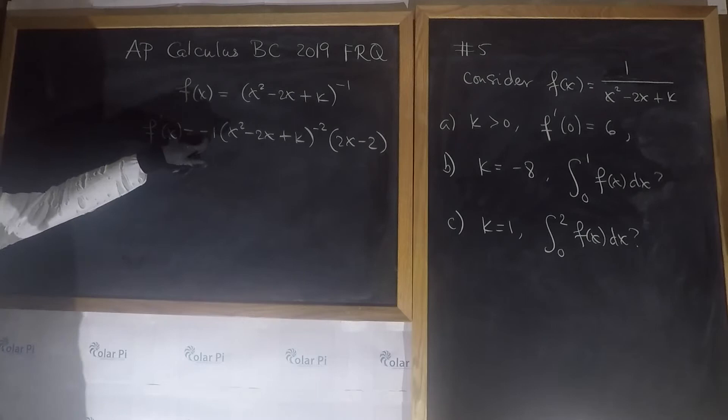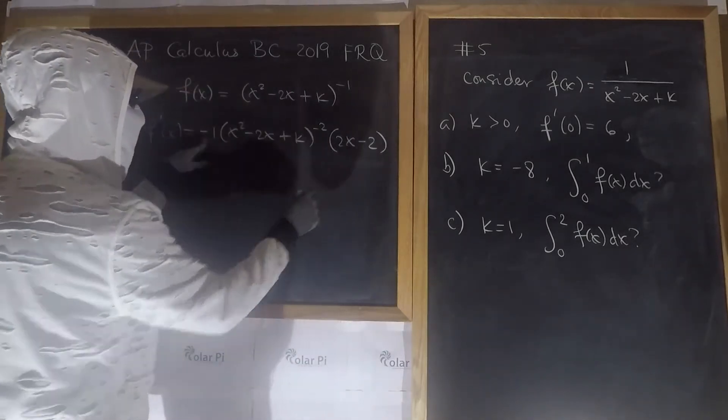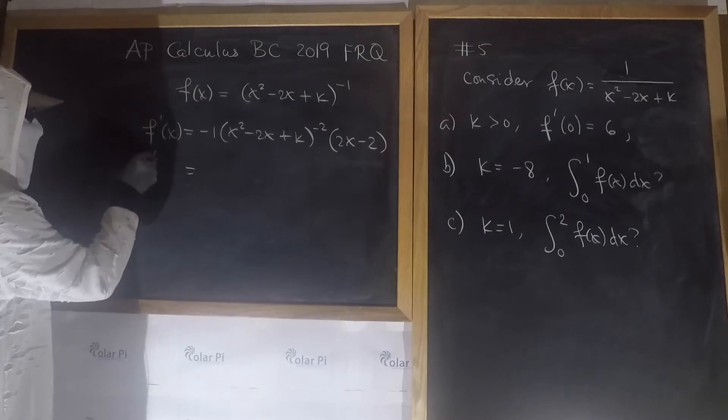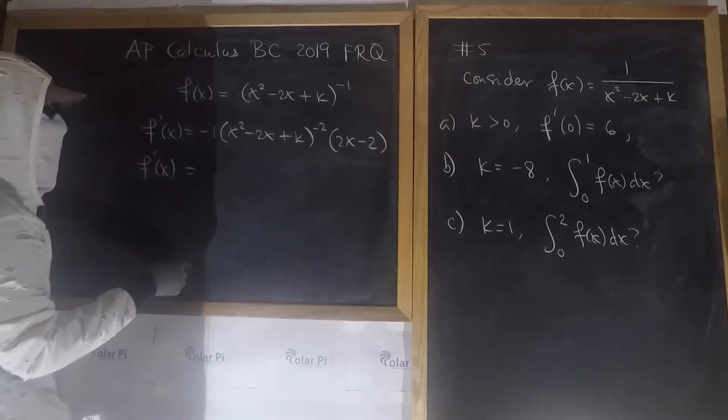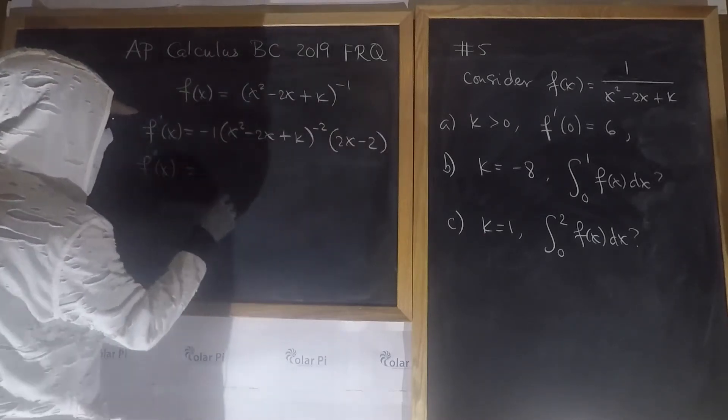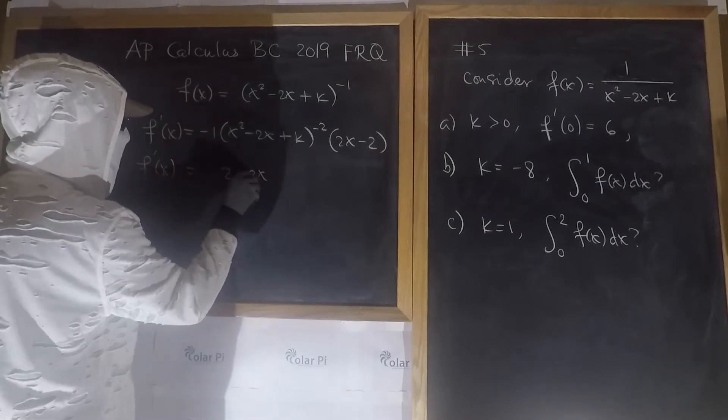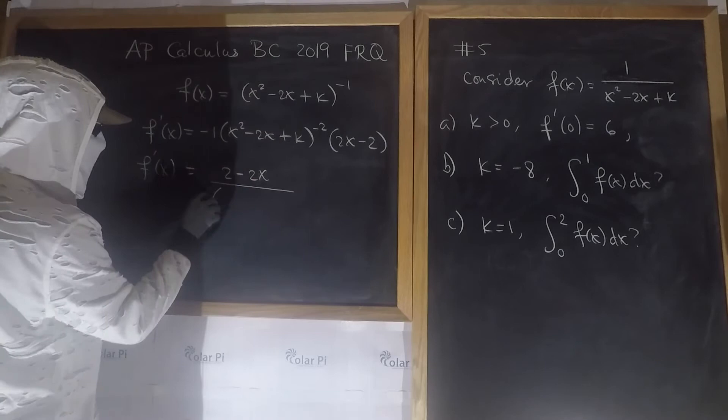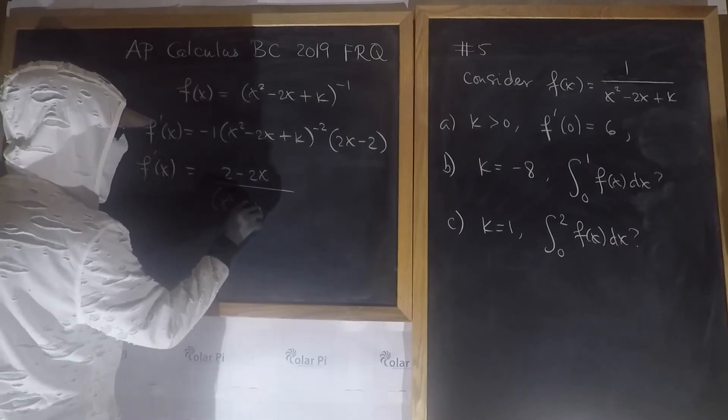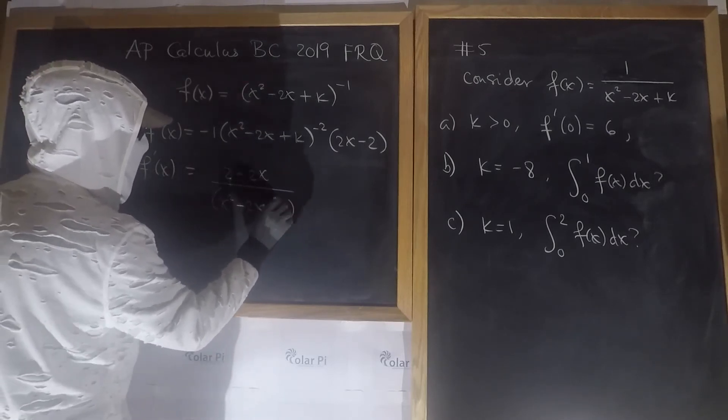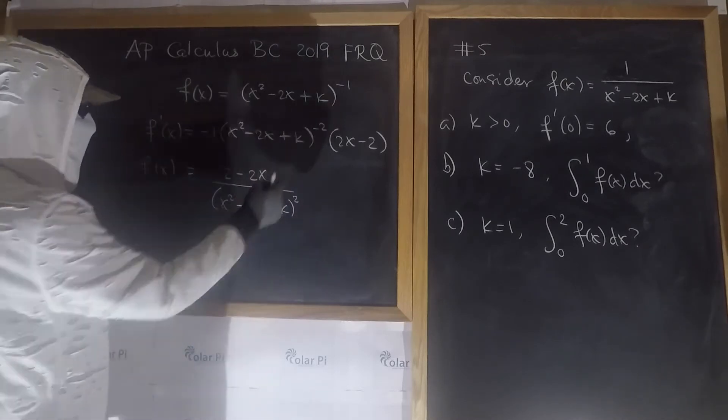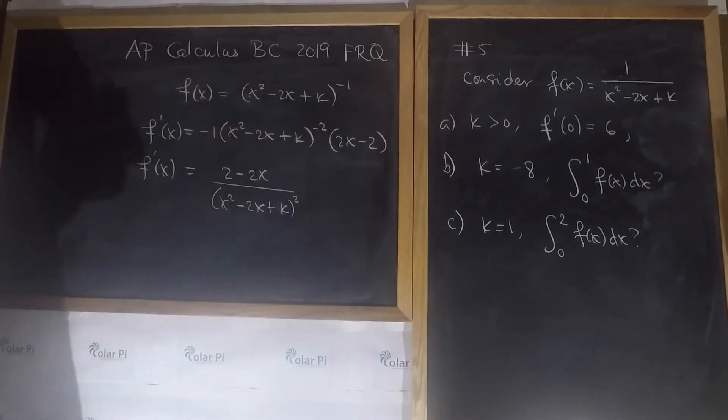And next, we multiply this negative 1 to this here, so that way, you know, clean it up. When we multiply negative 1 to this, it's going to be 2 minus 2x, and our denominator is going to be x squared minus 2x plus k to the power positive 2, and that's just exponent rules. That negative 2 we can write as a denominator with a power positive 2.